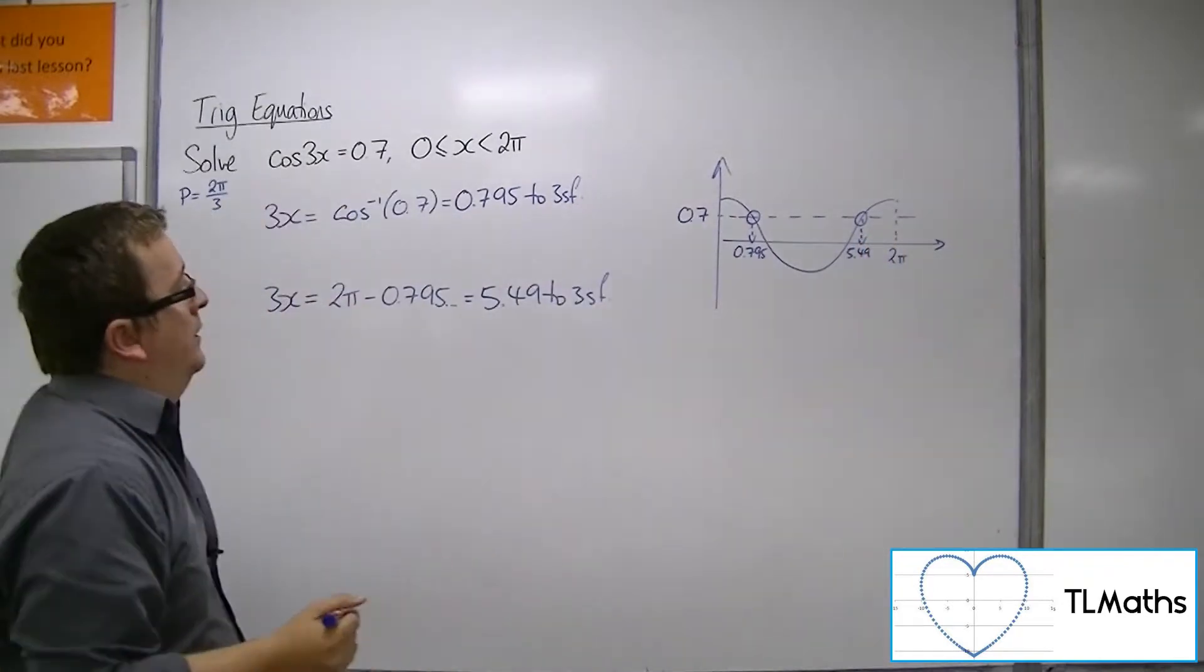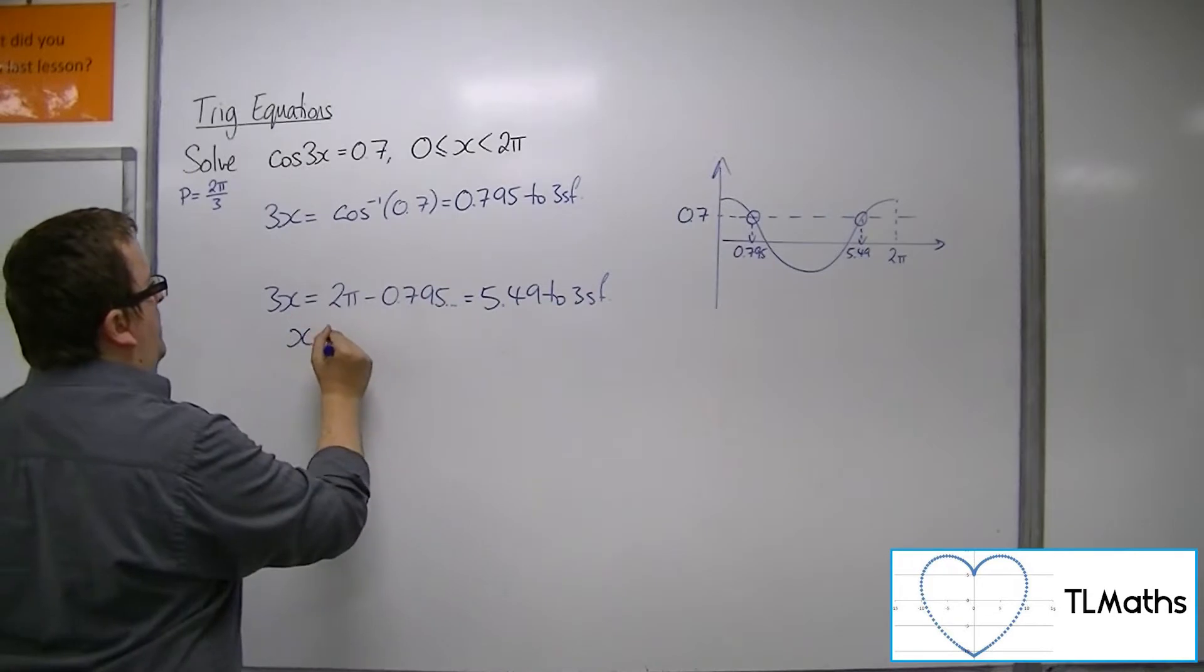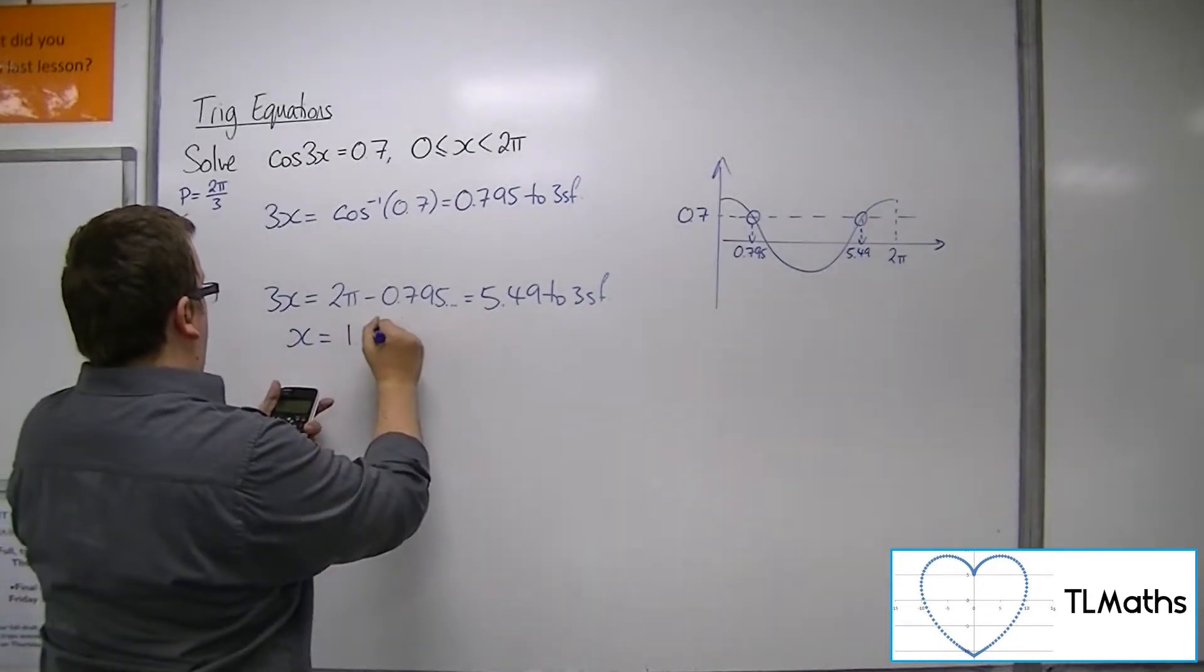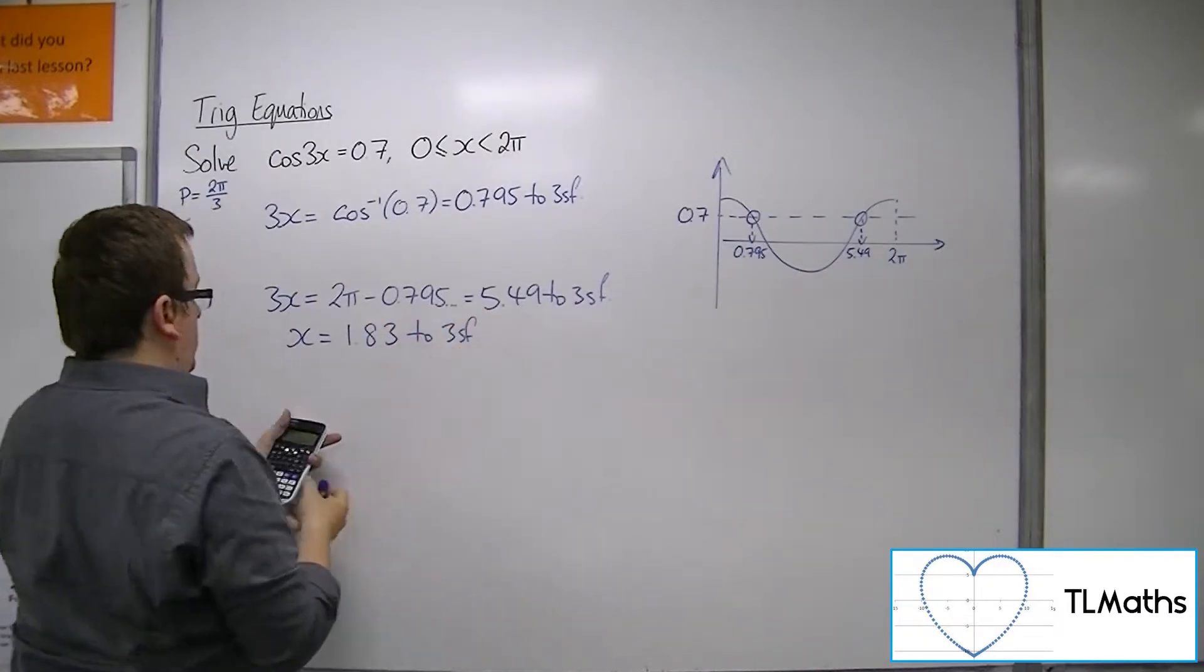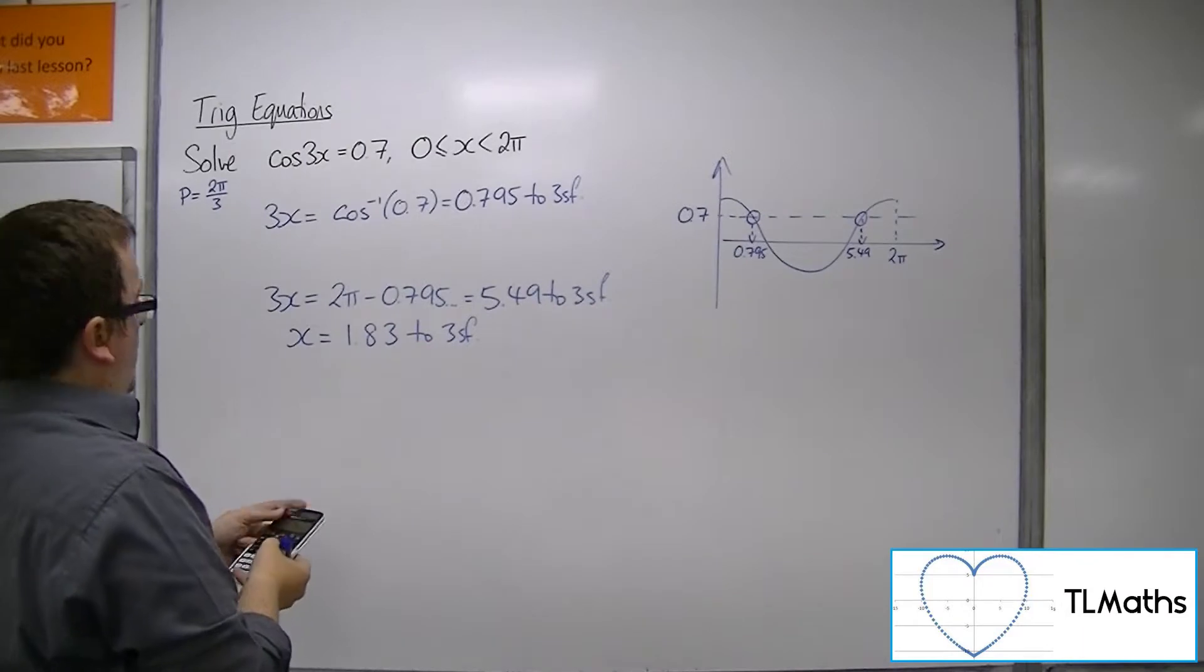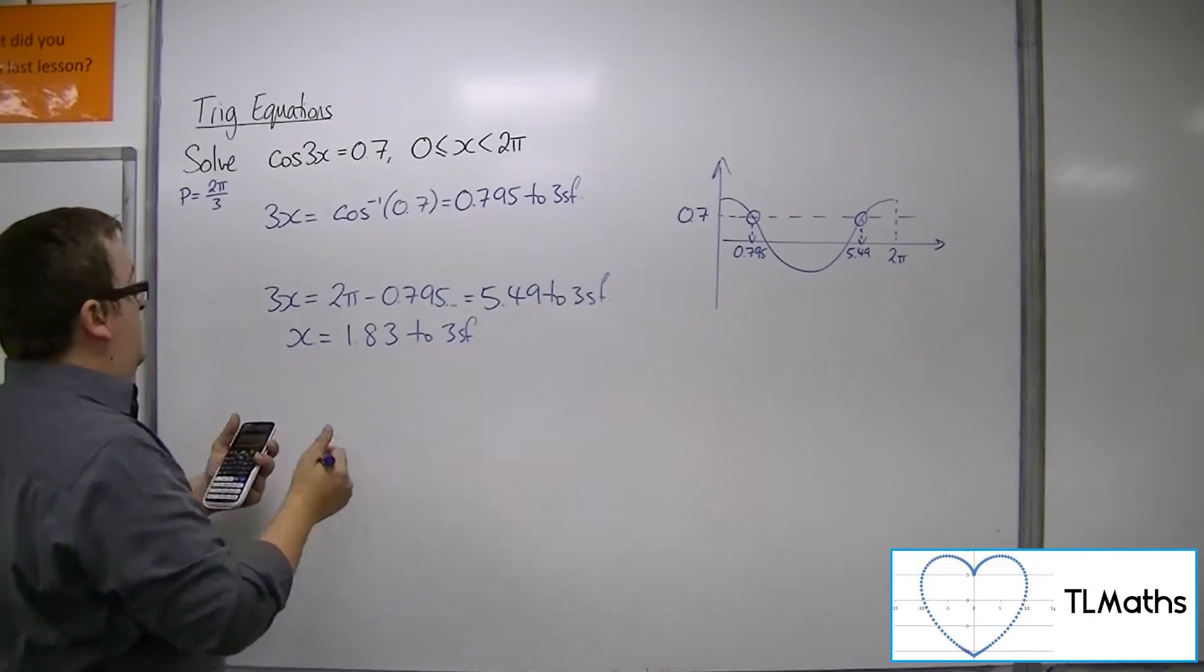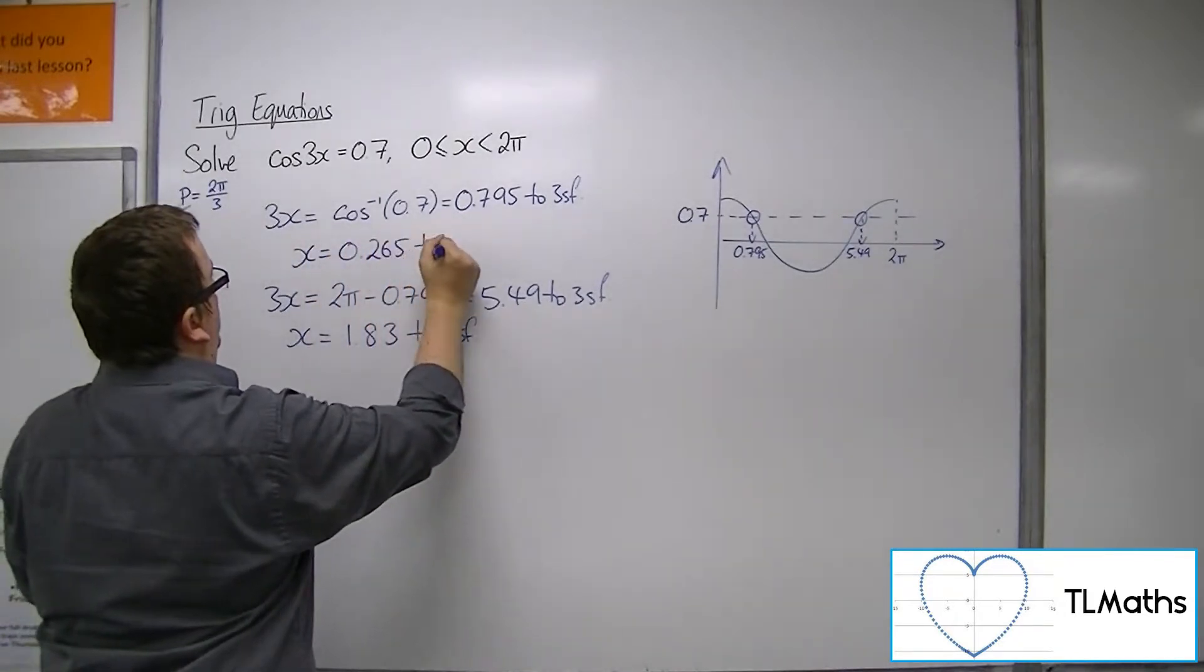Now we apply the transformation by dividing both sides by 3. So 5.49 divided by 3 equals 1.83 to 3 significant figures. And cos^(-1)(0.7) divided by 3 is 0.265 to 3 significant figures.